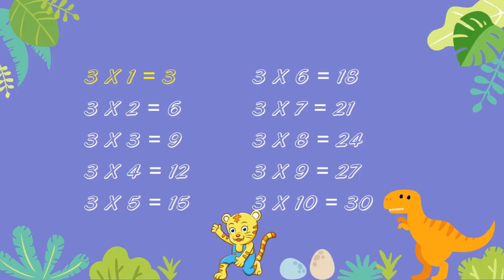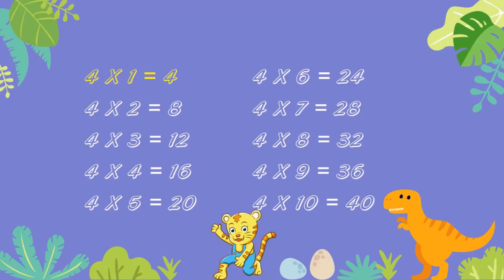3 ones are 3. 3 twos are 6. 3 threes are 9. 3 fours are 12. 3 fives are 15. 3 sixes are 18. 3 sevens are 21. 3 eights are 24. 3 nines are 27. 3 tens are 30.